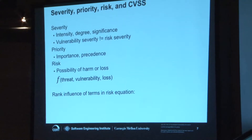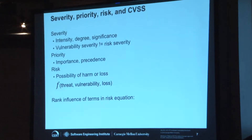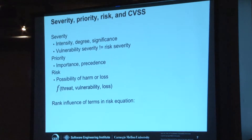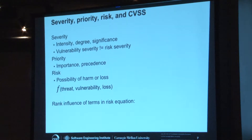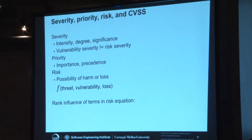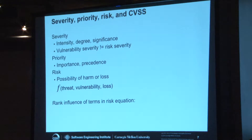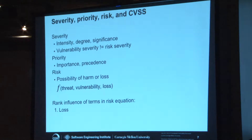Severity is the intensity, the seriousness of something. And severity of a vulnerability is not severity of risk — they are not the same thing. Very important. Priority is what you do first or second. And risk — there's a risk equation. I use loss instead of impact. When I think about the risk factors, what are the biggest of those three terms? I'm a vulnerability person — I think about vulnerabilities all the time — but I would suggest loss, and maybe threat, are the most influential terms in that equation.